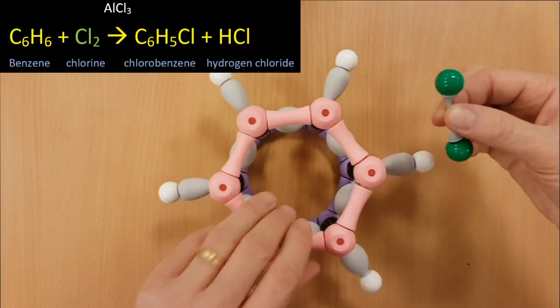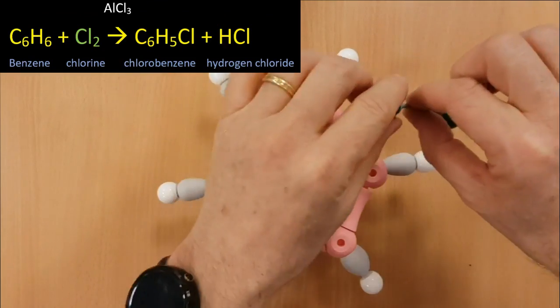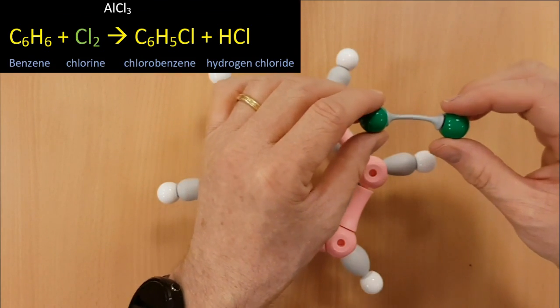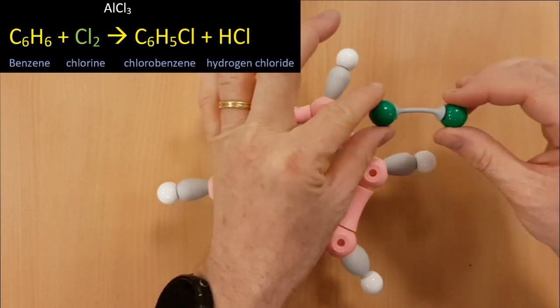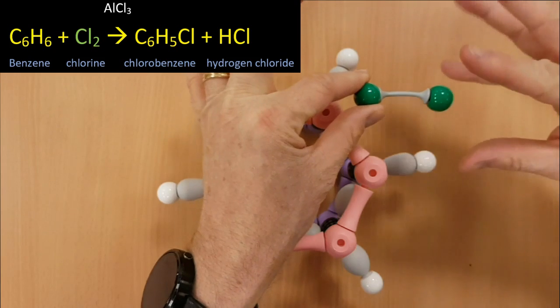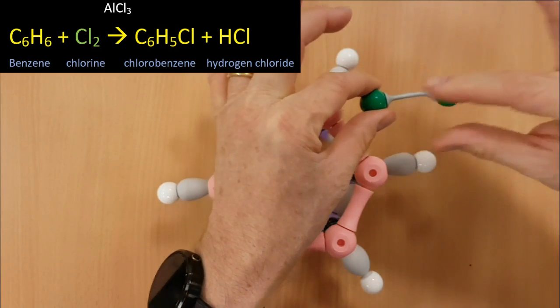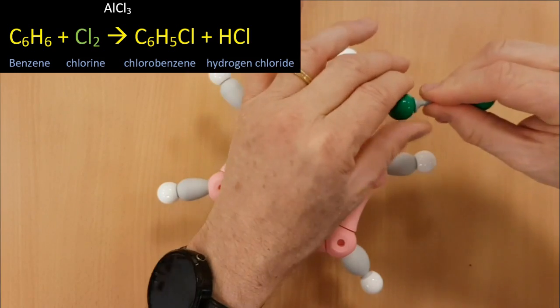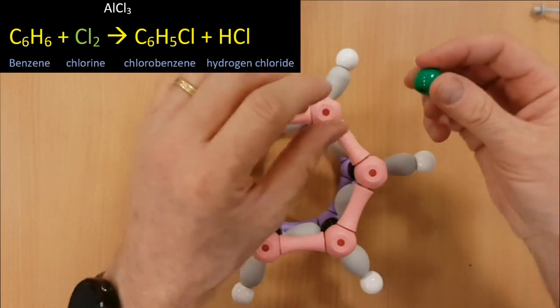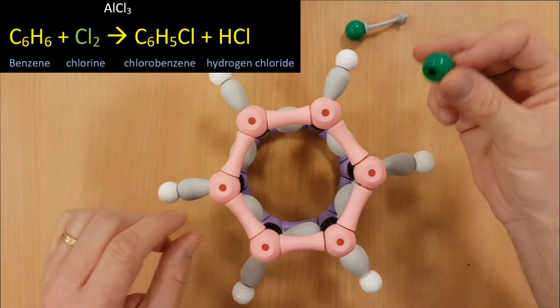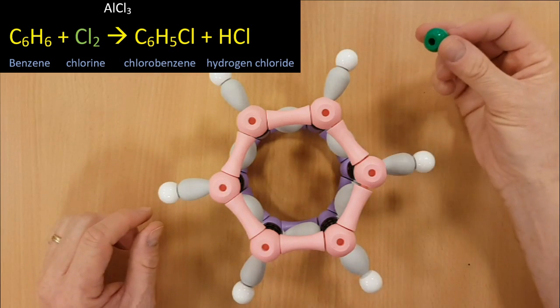Well if you look at the equation you need something called aluminium trichloride or aluminium chloride in order to come along. The aluminium chloride will grab this Cl with two electrons off, leaving behind Cl+, which is quite an unusual species.